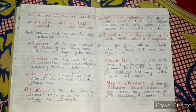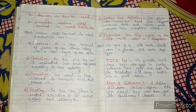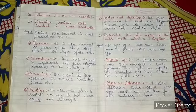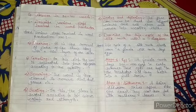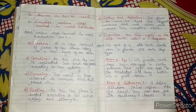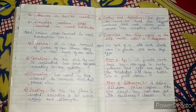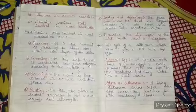Stage two mein kya hoga — silkworm hoga. A hairy silkworm arises after the eggs crack. Jab waha eggs crack honge, toh hairy silkworm release hoga. They are then fed with the mulberry leaves.